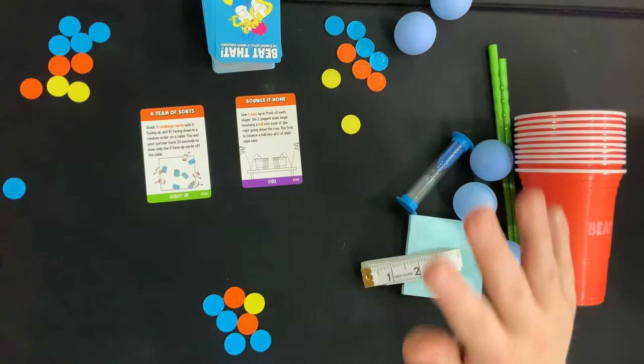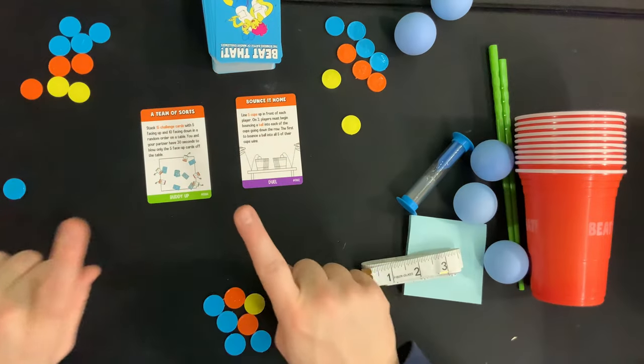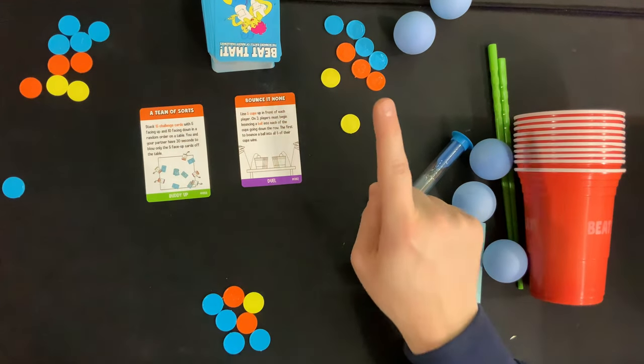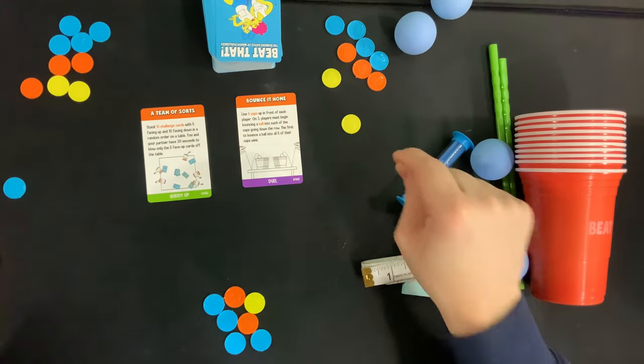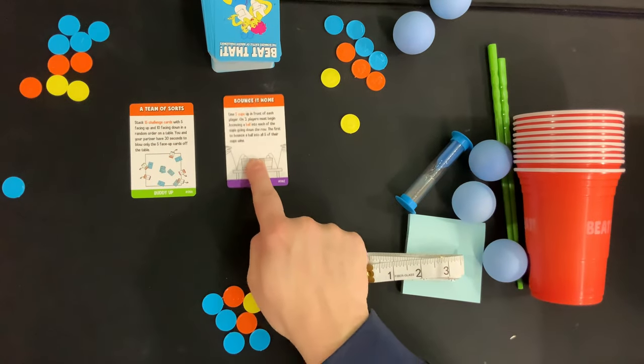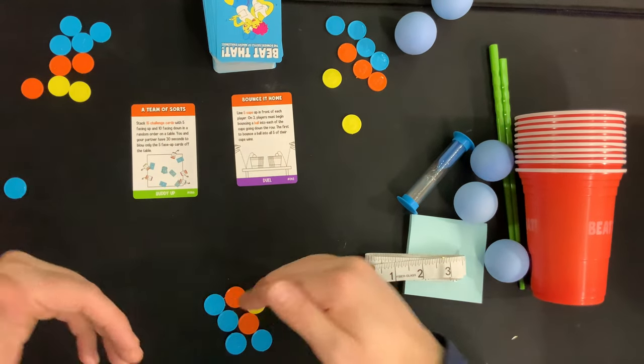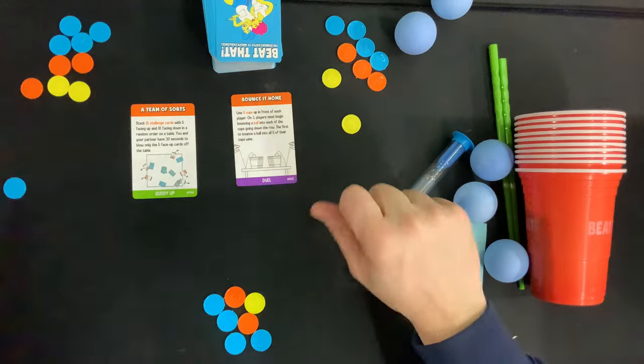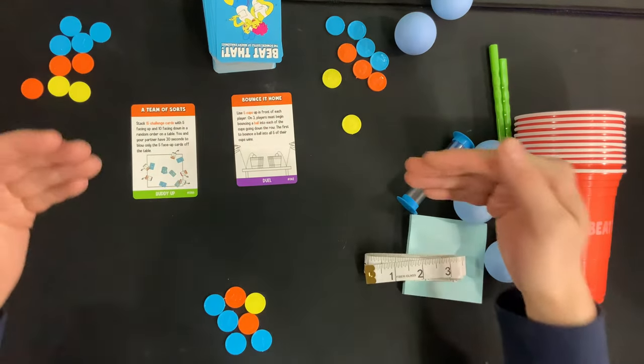They will watch everyone else perform the challenge and then they get to choose their partner after watching everyone else complete the challenge. So for instance if there was a duel challenge the odd person out would get to see who is the worst player at the challenge and then could go against them.